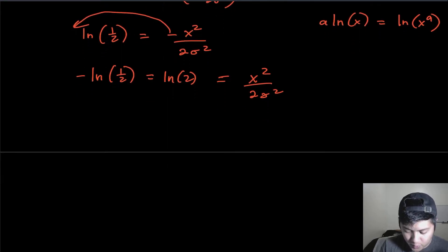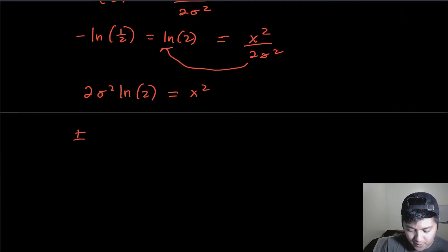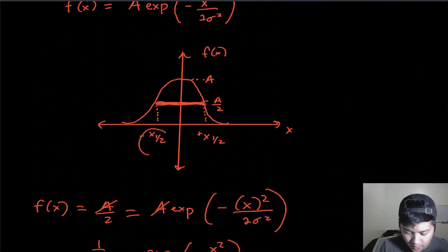So multiplying this 2 sigma squared over here, we will have 2 sigma squared log 2 is equal to x squared. And then if we take the square root of both sides, we'll have plus minus square root of 2 sigma squared log 2 is equal to x. So these are the two halfway points that I've drawn down here of the Gaussian distribution.